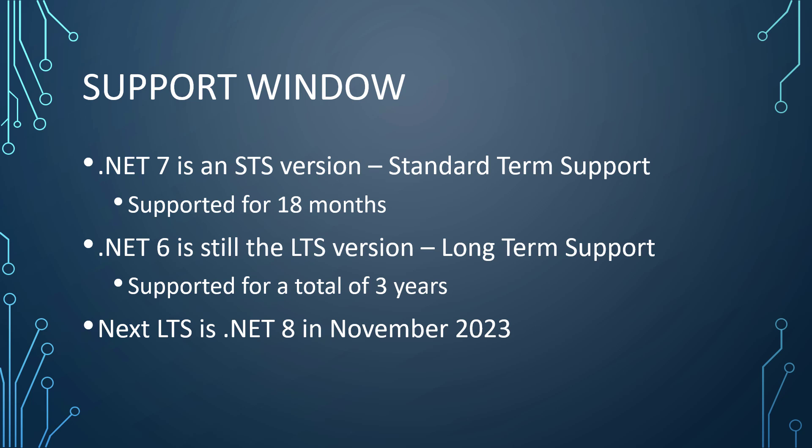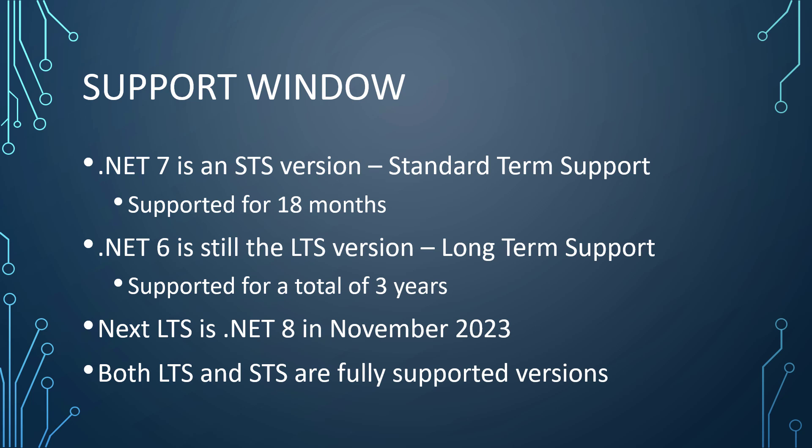The next LTS is set for .NET 8 in November 2023. Every November during .NET Conf, the new version of .NET will be released — so we can predict out into the future. .NET 10 will be November 2025. That's the pattern Microsoft is sticking to for the future. To be very clear, both LTS and STS are fully supported production-ready versions. .NET 7 is absolutely production ready and fully supported by Microsoft — the only difference is three years versus 18 months of support.